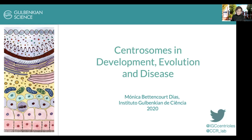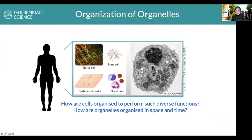In our group, we are really fascinated by how cells are organized in space and time — how do they execute such diverse functions, such as a nerve cell, a bone cell, skin, or blood? In particular, we are very interested in a small structure in our cells called the centrosome, which is composed of centrioles and is very important to many different functions in our cells, including organizing a skeleton that defines polarity and organization of structures in space and time.